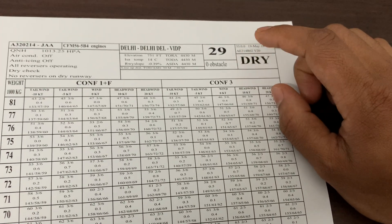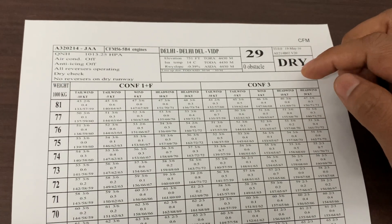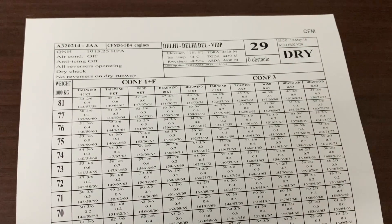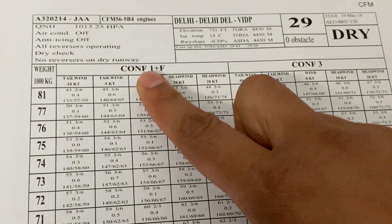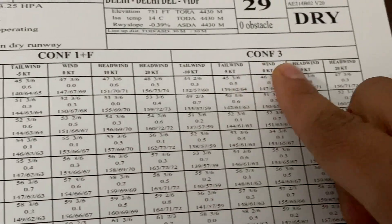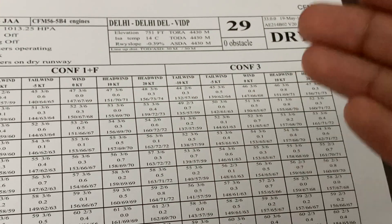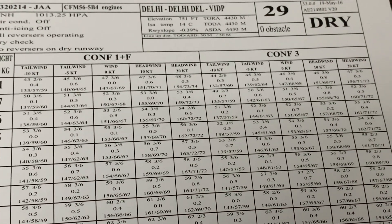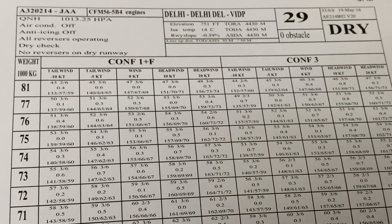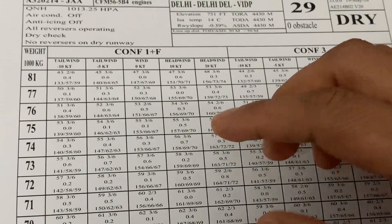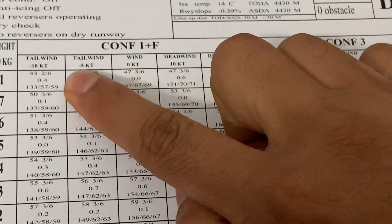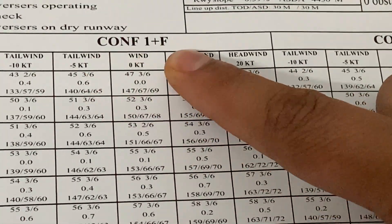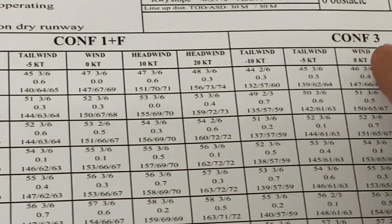This chart is generated from a software called OCTOPUS — Operational and Certified Takeoff and Landing Universal Software — and you can see the version of the software. On this chart you can see takeoff configurations: Config 1+F and Config 3. These are the two configurations given. In some charts you may find Config 1+2 and Config 3 as well. These configurations are given so you can calculate the optimum configuration for takeoff. Also shown is the wind information — tailwinds and headwinds for each configuration.